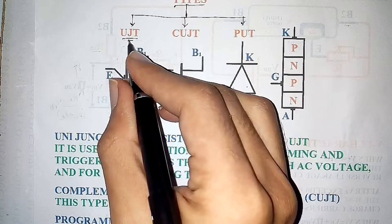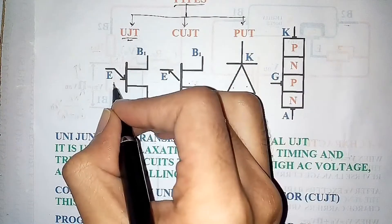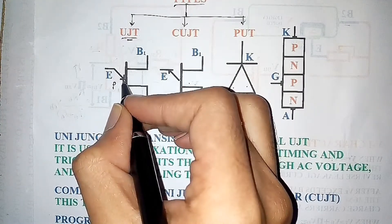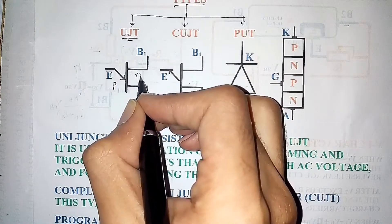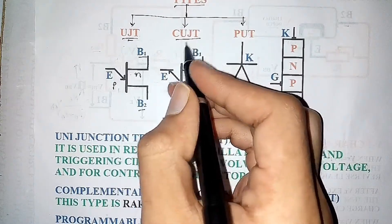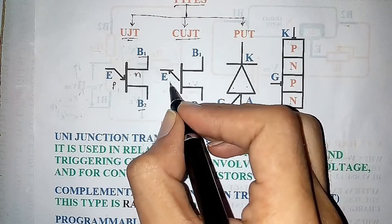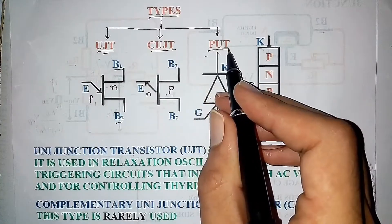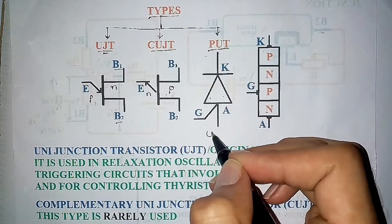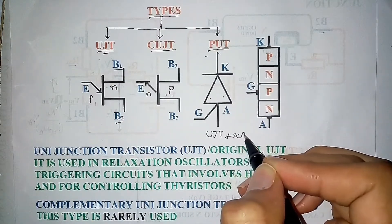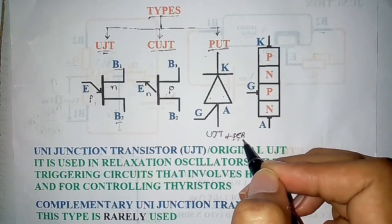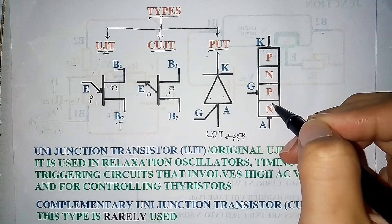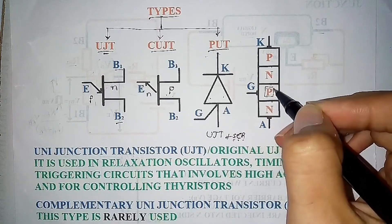UJT or original UJT has P-type emitter which is fused into N-type strip. Complementary UJT is similar but the emitter is made of N-type which is fused into P-type strip. Programmable UJT is a combination of UJT and SCR silicon controlled rectifier. It has three PN junctions and P-type is used as gate.